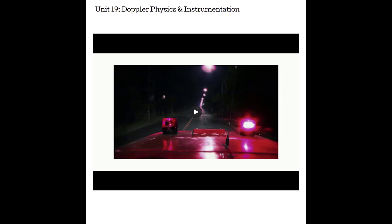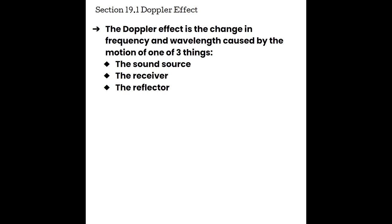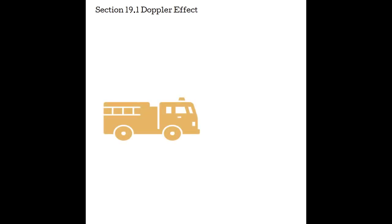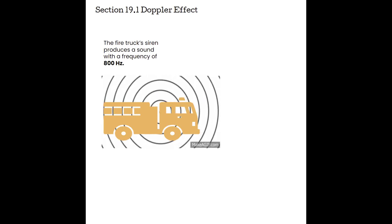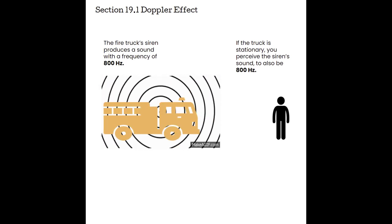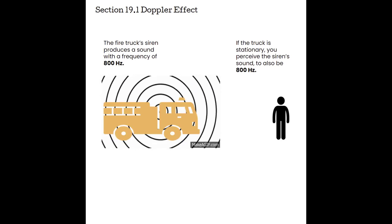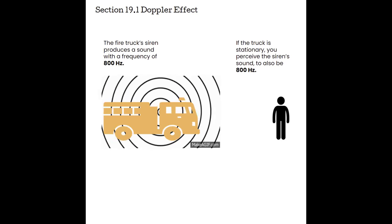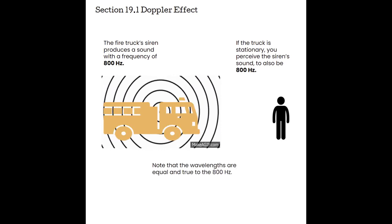The pitch getting higher as a vehicle comes towards you and then sounding lower as it drives away is called the Doppler effect. The Doppler effect is the change in frequency and wavelength caused by the motion of one of three things: either the sound source, receiver, or the reflector. Using a siren on a moving vehicle as our example — say a fire truck producing a sound at 800 Hz — if the truck is stationary, you perceive the siren to also be 800 Hz, receiving those wavelengths and that frequency as it comes out in the stationary position. The wavelengths are equal and true to the 800 Hz.